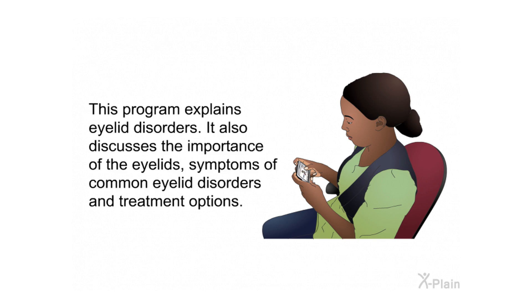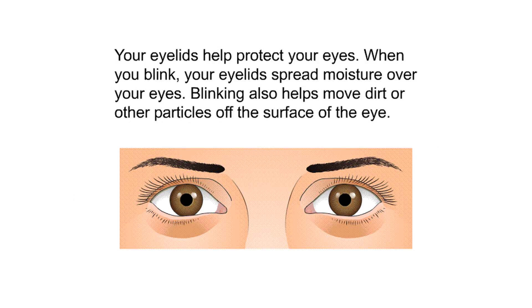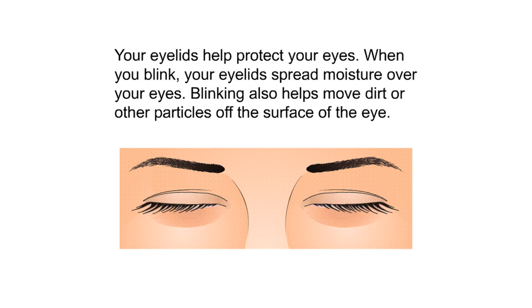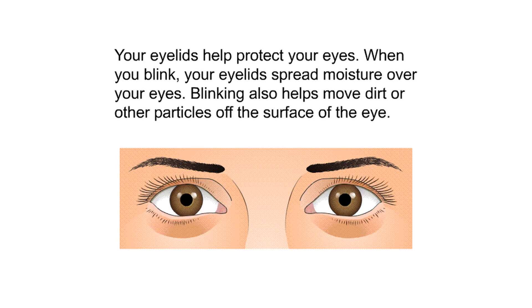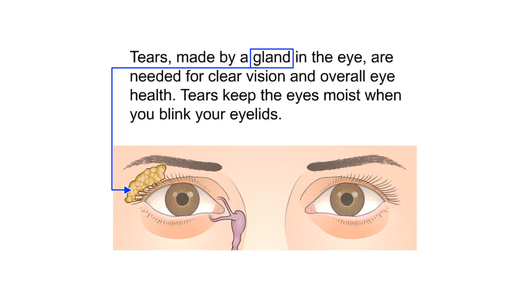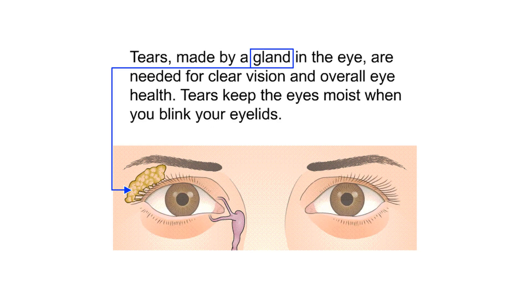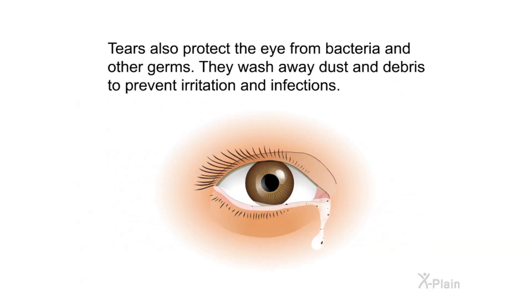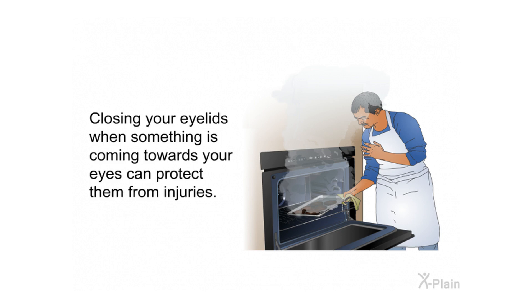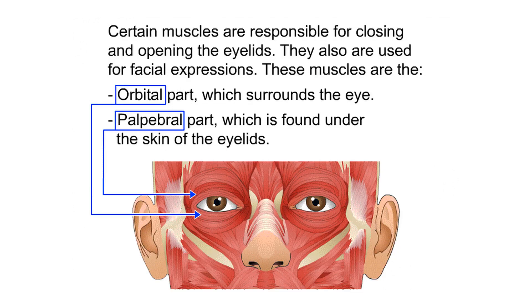The Eyelids. Your eyelids help protect your eyes. When you blink, your eyelids spread moisture over your eyes. Blinking also helps move dirt or other particles off the surface of the eye. Tears made by a gland in the eye are needed for clear vision and overall eye health. Tears keep the eyes moist when you blink. They also protect the eye from bacteria and other germs, washing away dust and debris to prevent irritation and infections.